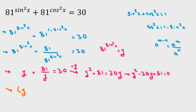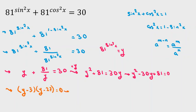Let's factor: we need a product of 81 and a sum of negative 30, which gives us minus 3 and minus 27. So y equals 3 or y equals 27.